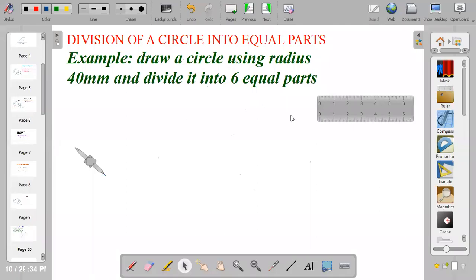Division of a circle into six equal parts. Draw a circle using radius 40mm and divide it into six equal parts.